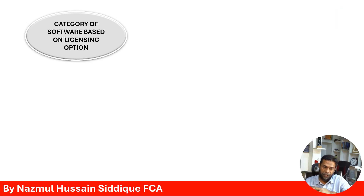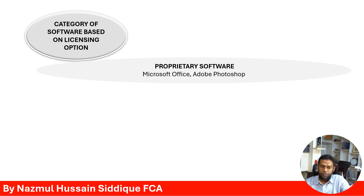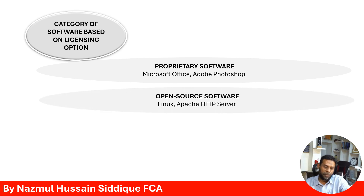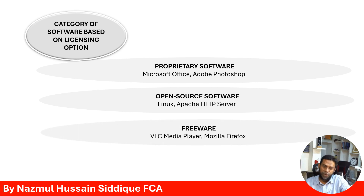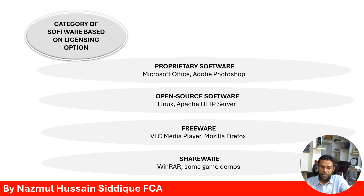Software can also be categorized based on licensing. Proprietary software includes products like Microsoft Office and Adobe Photoshop. Open source software includes Linux and Apache HTTP Server. Freeware includes VLC Media Player and Mozilla Firefox. Shareware examples include WinRAR and some game demos.